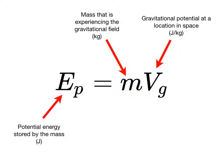To calculate the amount of gravitational potential energy that a mass has when it's at some location in space, we multiply the mass in kilograms by the gravitational potential in joules per kilogram at that point.